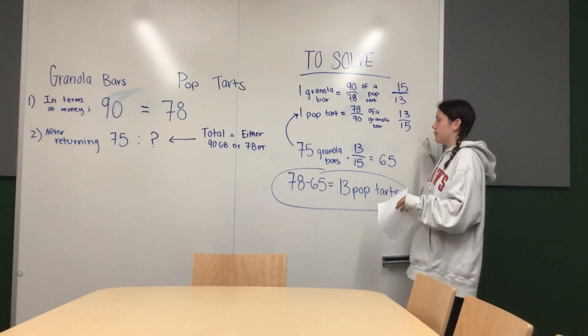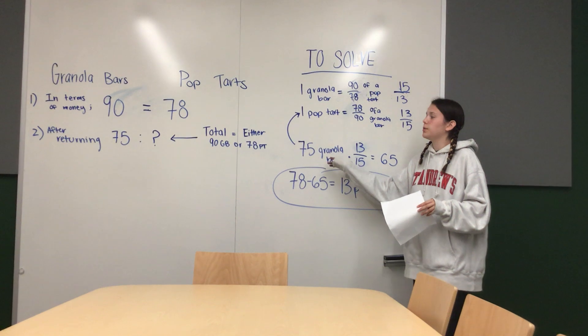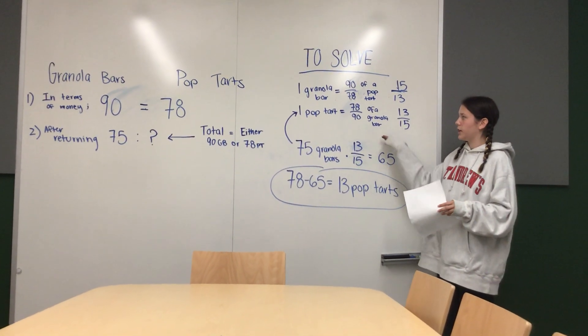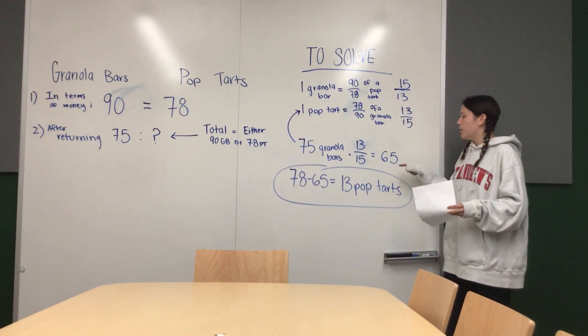And then you have to figure out what 75 granola bars are equal to in terms of Pop-Tarts. So you just multiply that by 13/15ths to put it in terms of Pop-Tarts, which is 65.